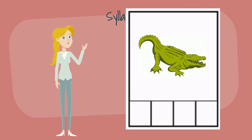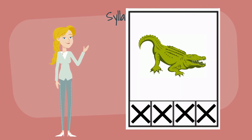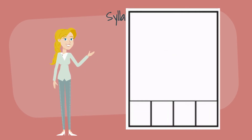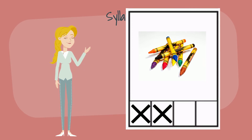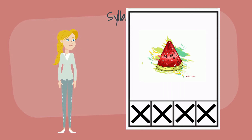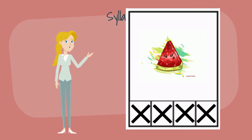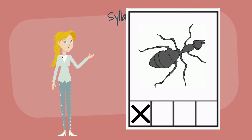How many syllables in the word crocodile? Say it slowly and clap for each mouthful of sounds. Crocodile. There are three syllables in the word crocodile. Clap the syllables in the word crayon — say it slowly and clap. Crayon. There are two syllables in the word crayon. Now we will count the syllables in watermelon — say it slowly and clap each syllable. Watermelon. There are four syllables in the word watermelon. Ant — clap the syllables. There is only one syllable in the word ant.